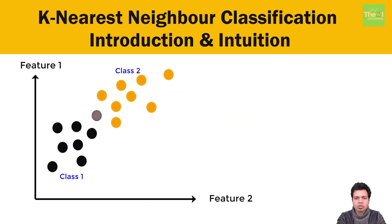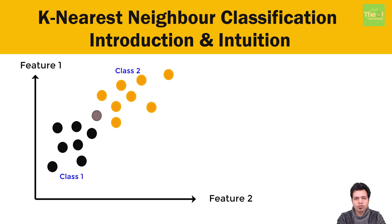Let's see it in action. We have our black and orange classes in two-dimensional space, and we have a new observation. As part of step 1 we choose the value of k — let's say k equals 5. In step 2 we calculate the distance of point x from all other data points and identify the five nearest data points with the least distance to point x. In our case, these are those five neighbors.